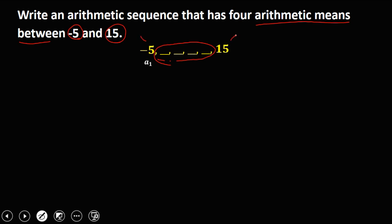So we have a sub 1, a sub 2, a sub 3, a sub 4, a sub 5, and a sub 6. So we have 6 terms, and the unknowns are a sub 2, a sub 3, a sub 4, and a sub 5.